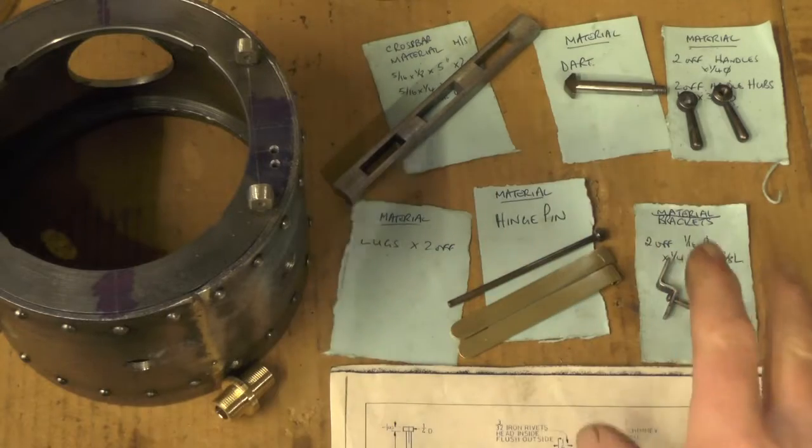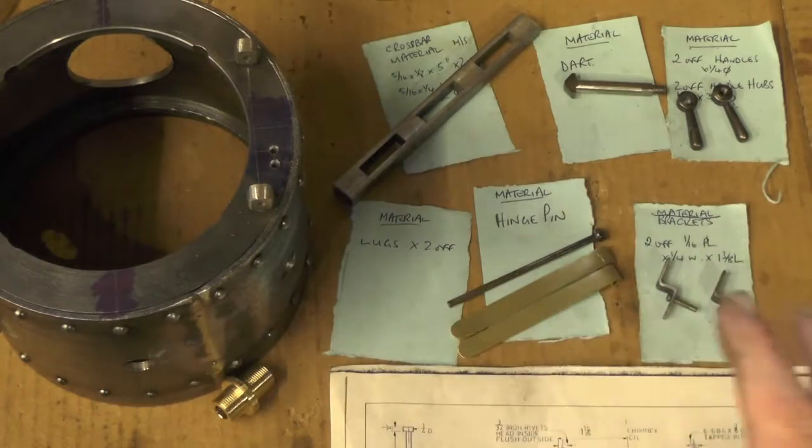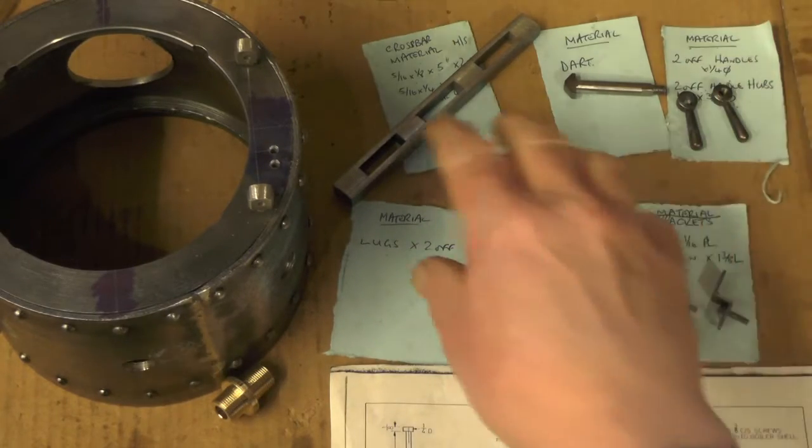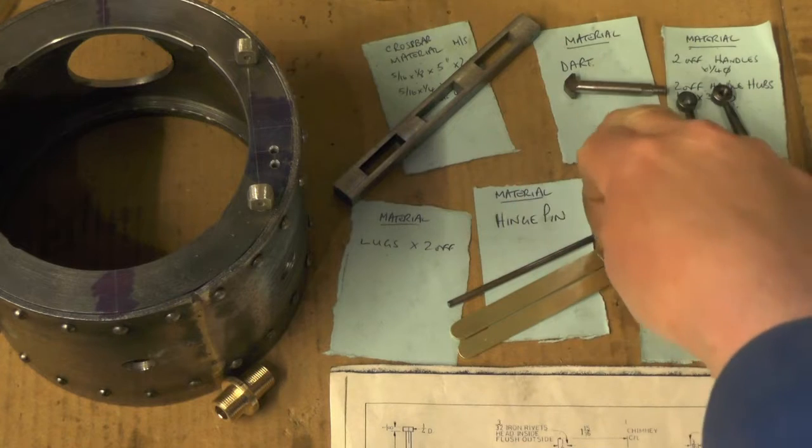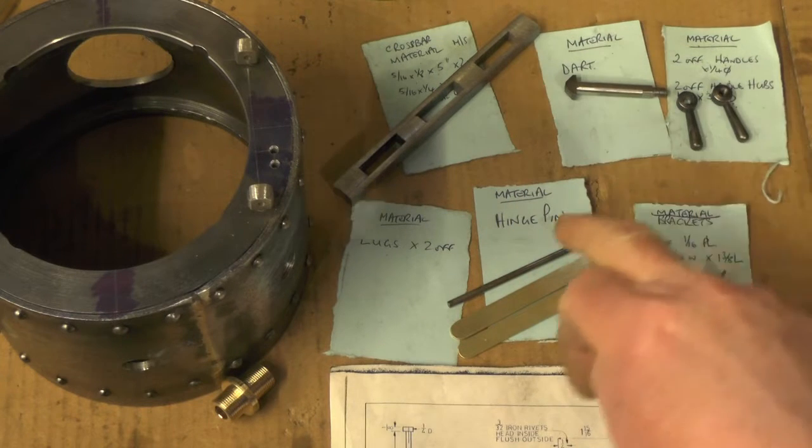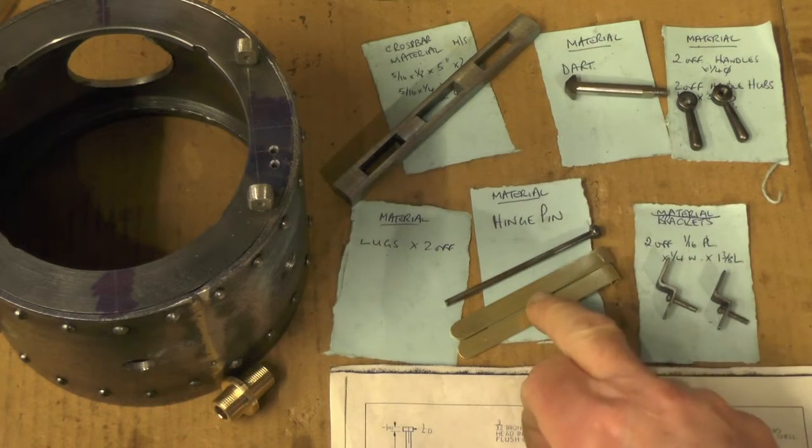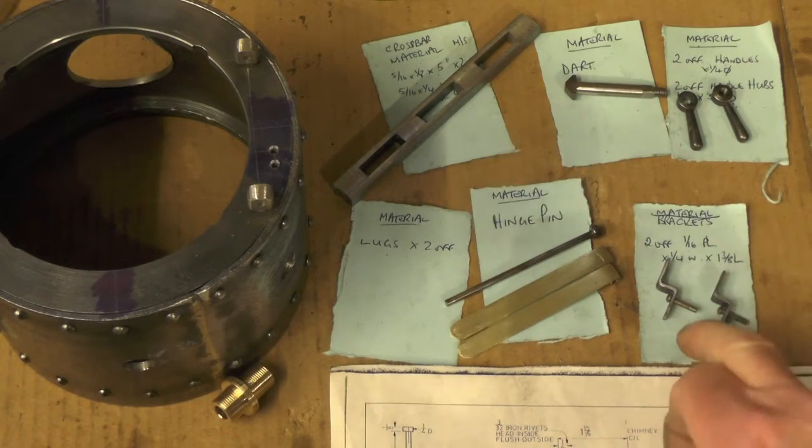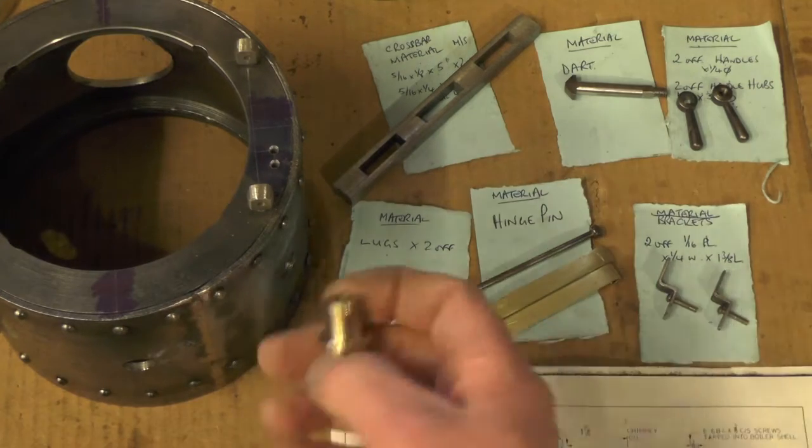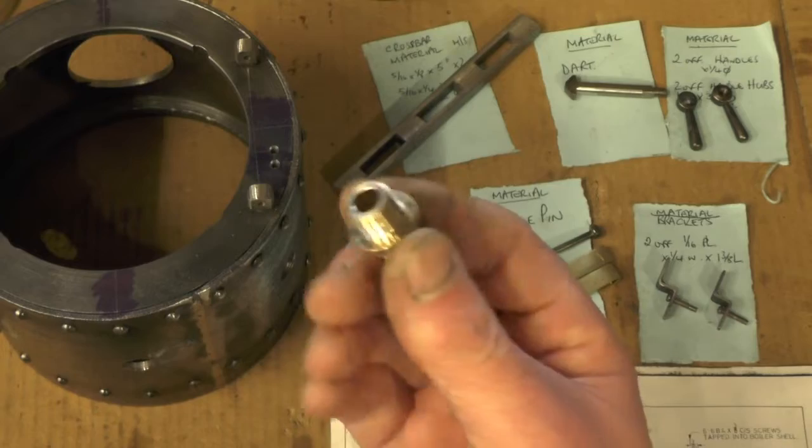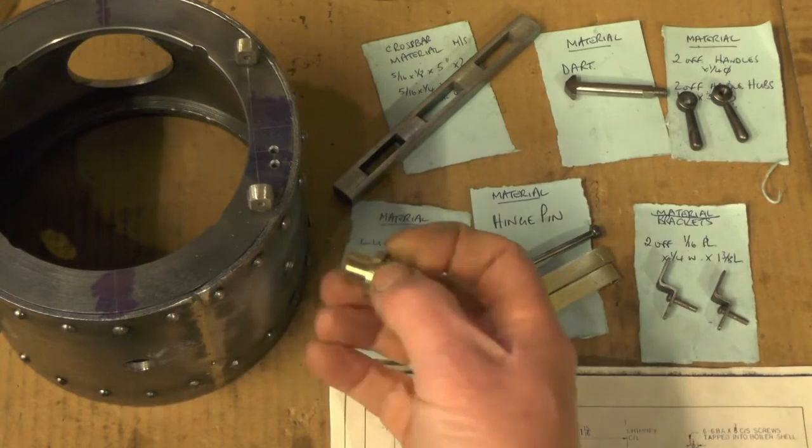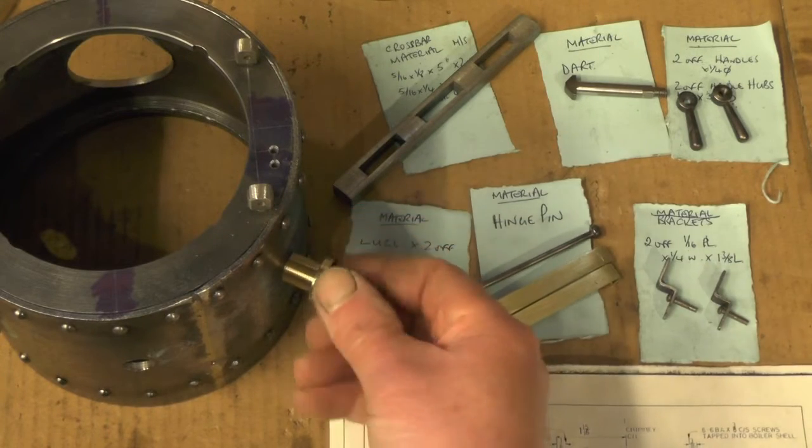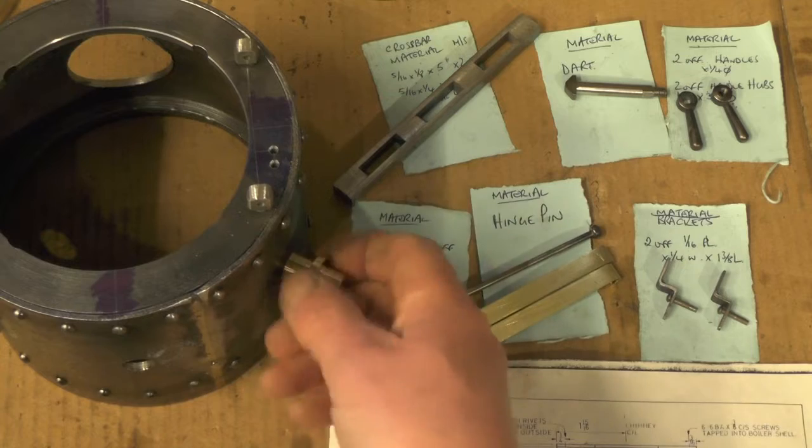Okay then, I've got all the components finished now for this part of the project. That is the crossbar, the dart, the handles, the hinge pin, the hinges, the crossbar brackets. I've also made the steam pipe unions that will be silver soldered into the smokebox.